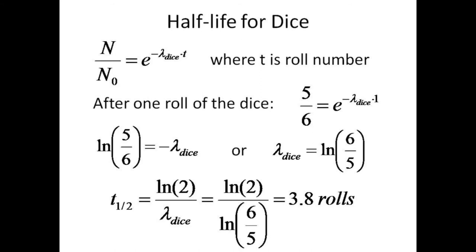Since all the die have six sides, n over n0 is equal to 5 sixths when t equals one roll of the dice. Taking the log of both sides gives a lambda of log of 6 fifths. The half-life should thus be log 2 divided by log 6 fifths, or approximately 3.8 rolls. In approximately 3.8 rolls of all the dice, we will expect to have removed about half of the dice.